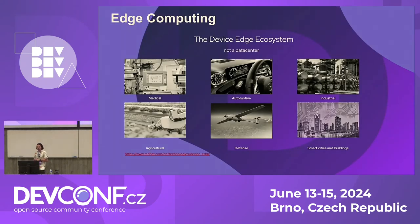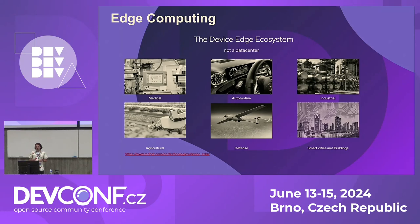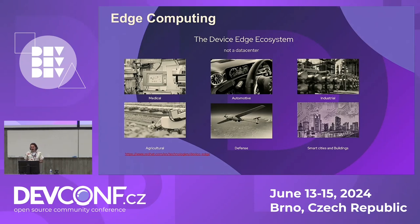What is edge computing? This word can mean different things for different people. In our industry, we've been trying to centralize workloads for decades — building data centers with thousands of servers that we call the cloud. Nowadays, more and more devices are connected to the internet: sensors, IP cameras, smart lights. All these industries are generating huge amounts of data, and it's not sustainable to send all this data across networks to the data center. So, we need to put computing power closer to where the data is generated — that is the definition of edge computing.